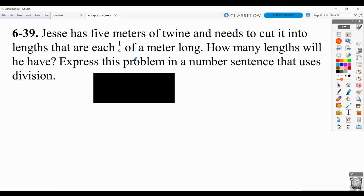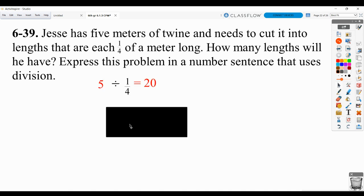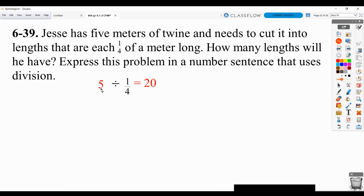And then Jesse has 5 meters of twine. He needs to cut it into lengths that are 1/4 of a meter long. How many lengths will he have? Well, if you take 5 and divide it into fourths, and you can draw a picture to help you with that, similar to the ruler problem, you'll get 20. So the division problem would be 5 divided by 1/4 equals 20. There are 20 sets of 1/4 or quarters in 5.